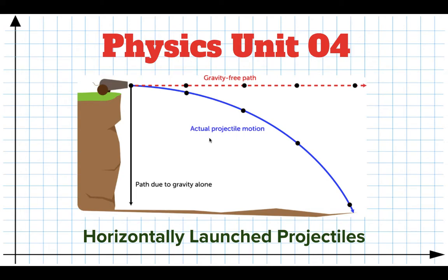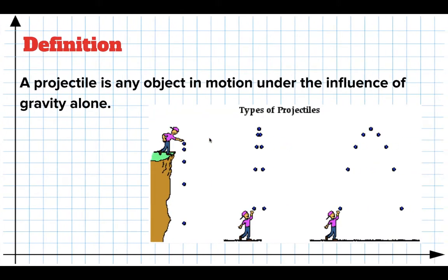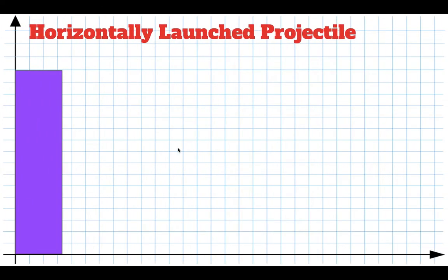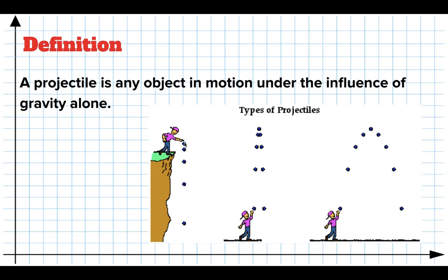We're going to look at projectiles, and specifically horizontally launched projectiles. So let's first define what a projectile is. A projectile is any object that is in motion under the influence of gravity alone. So if you drop a ball right here, gravity acts on it and causes it to accelerate downwards. That's a projectile.